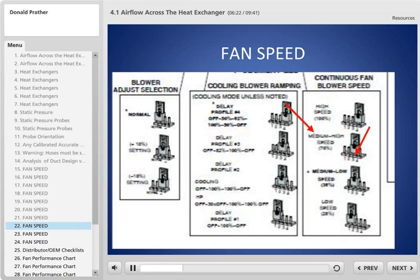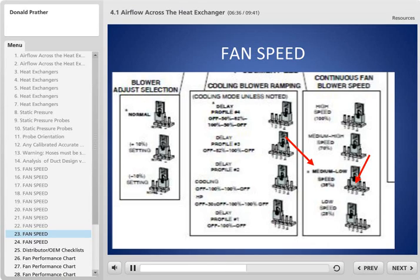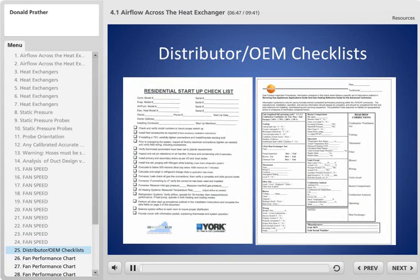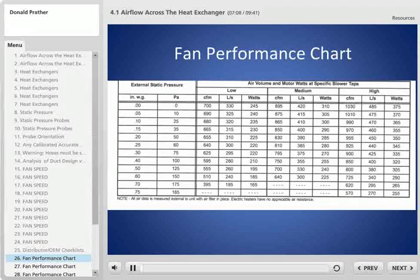Medium speed at 70% is on pins three and four. Medium-low speed at 38% has two pins on the right open and one on the left open. Low speed has all pins to the right open with the two on the left connected. You can also check the distributor's residential startup checklist left with the unit, or the equipment startup sheet from the manufacturer, to verify what speed the fan was set at — technicians are usually very good at this.